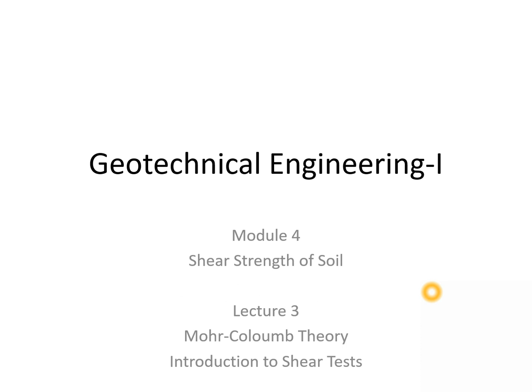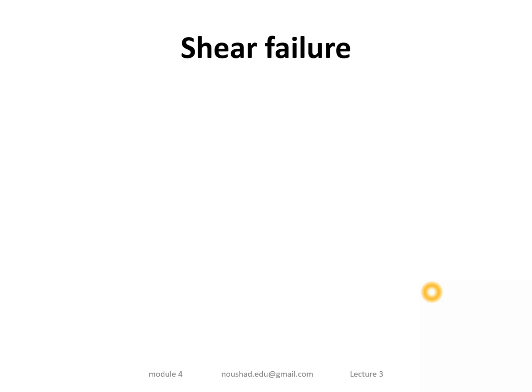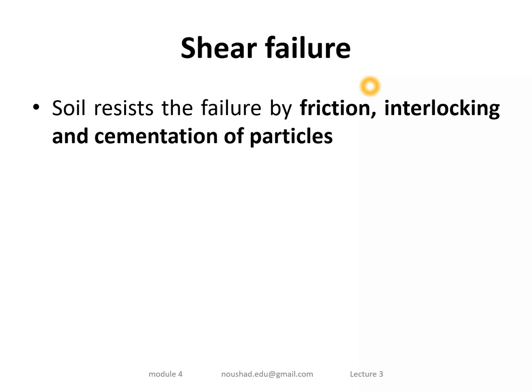In this lecture we are going to discuss about the Mohr-Coulomb theory and an introduction to various shear testers. Shear failure in soil occurs by slip or sliding, and this slip or sliding is resisted by friction or by interlocking and cementation of particles. Friction and interlocking is a frictional property of soil.